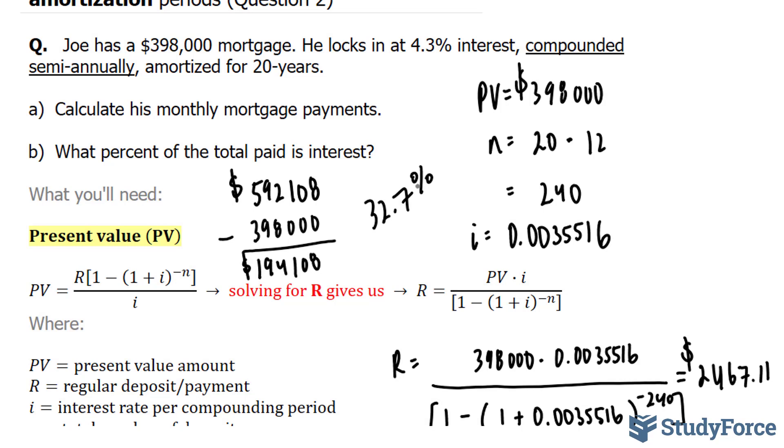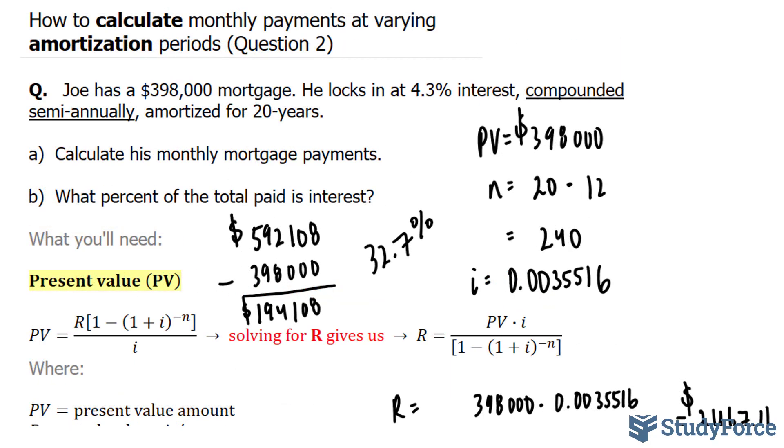So the person who is loaning this money has just acquired $194,108 in his pocket for being able to loan to Joe $398,000 today. So there you have it. That is how to calculate monthly payments at varying amortization periods.